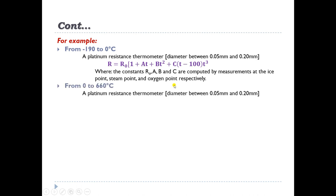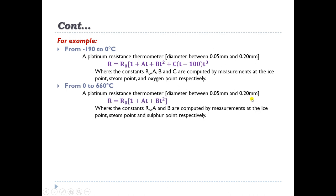From 0°C to 660°C, a platinum resistance thermometer with wire diameter between 0.05 mm and 0.20 mm is used. The polynomial equation used is R = R₀(1 + AT + BT²), where the constants R₀, A, and B are computed from measurements at the ice point, steam point, and sulfur point respectively.